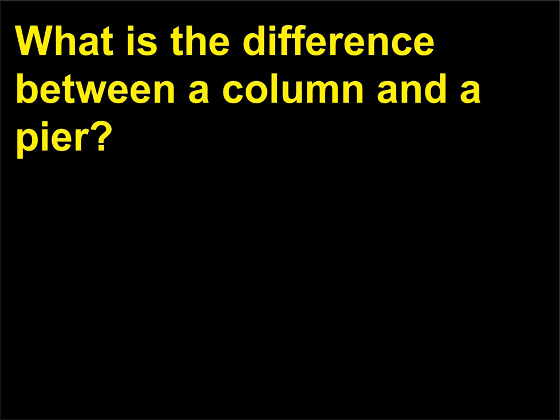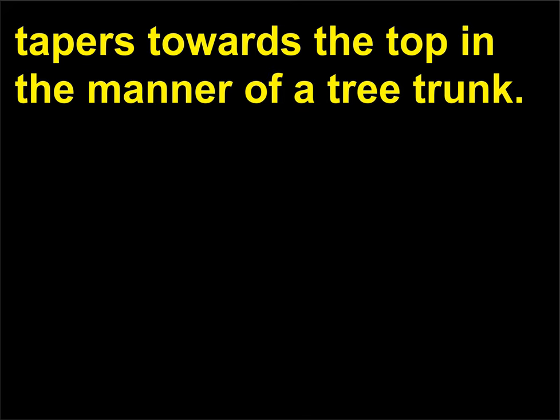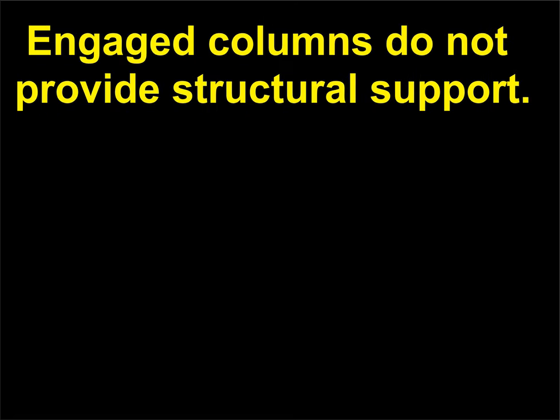What is the difference between a column and a pier? A column is a cylindrical vertical support that usually tapers towards the top in the manner of a tree trunk. Columns can be freestanding or engaged, which means they are attached to a wall. Engaged columns do not provide structural support.